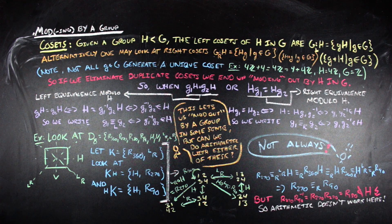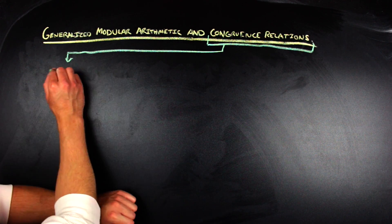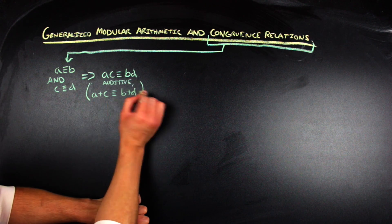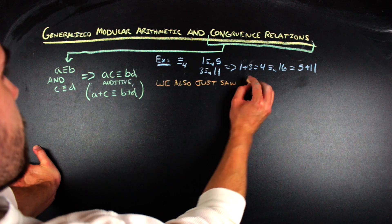Arithmetic breaks down. What's missing is that the equivalence relation needs a little more structure — specifically, it needs to be a congruence relation. An equivalence relation is a congruence relation if, whenever a ≡ b and c ≡ d, then a·c ≡ b·d. This is the property that modulo 4 arithmetic has, which our subgroup of the symmetries of the square did not.